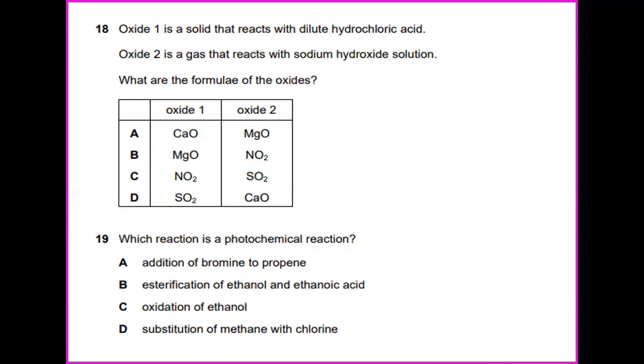Oxide 1 is a solid that reacts with dilute hydrochloric acid. This is magnesium oxide. Oxide 2 is a gas that reacts with sodium hydroxide solution. This is NO2. What are the formulas of the oxides? The answer will be magnesium oxide and NO2, which is nitrogen dioxide.